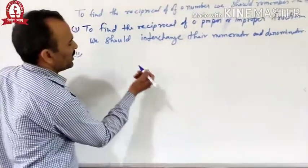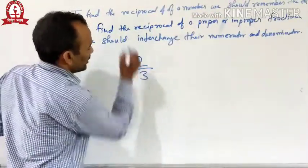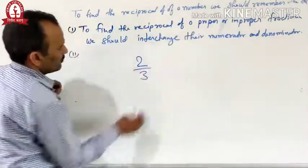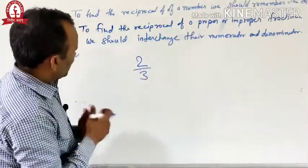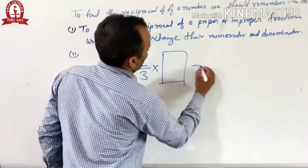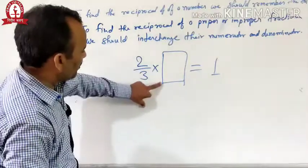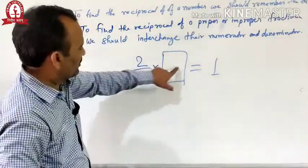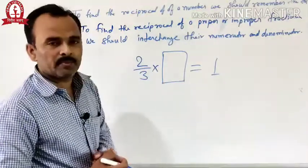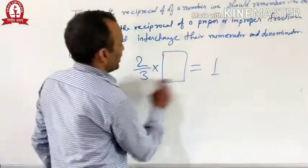I want to explain this with an example. Suppose you have a number 2 by 3. When we multiply 2 by 3 to a number and the product is 1, then what is that number? To find this number we should divide 2 by 3 by 1.